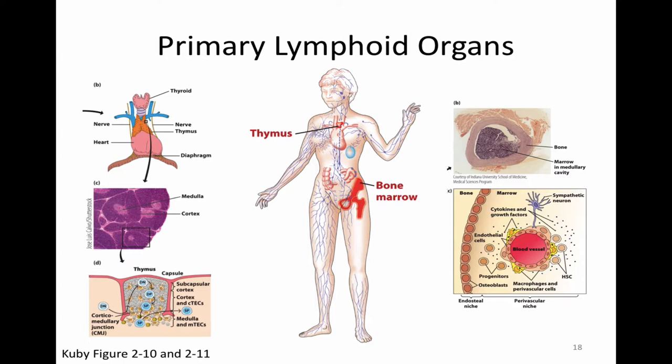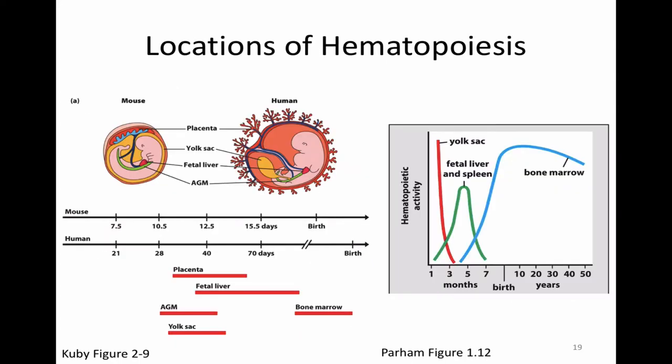This process of hematopoiesis is happening in the primary lymphoid organs, specifically in the bone marrow, once you are born. You do a little bit of hematopoiesis in other organs before birth — like the yolk sac, fetal liver, and spleen — but by the time you're born, all of your hematopoiesis is happening in the bone marrow. Notice you did some hematopoiesis before you were born, and also notice you keep doing hematopoiesis throughout your life. So next time you're feeling lazy, you can say you're doing hematopoiesis — because in fact you are doing white blood cell development at all times.